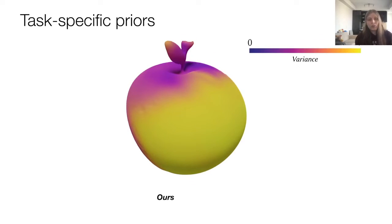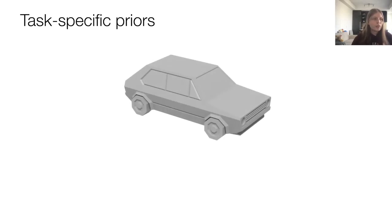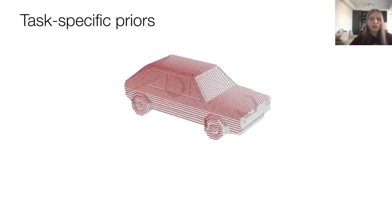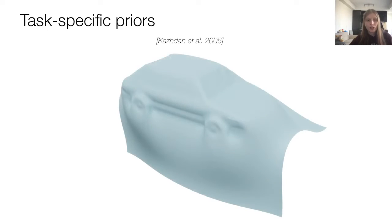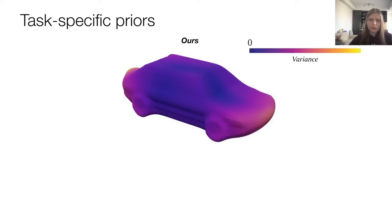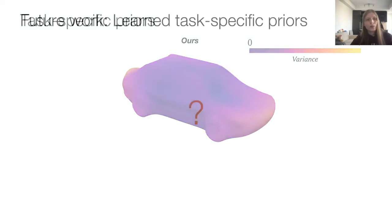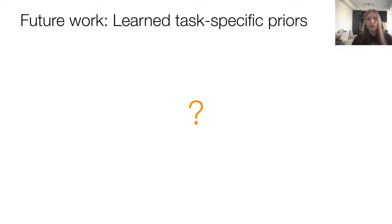Alright, an apple is still a pretty simple shape, even if a useful one in some agricultural robotics applications, but even marginally more complex priors can work for more complex examples. For example, by adding a prior to a car reconstruction, we get a much closer reconstruction to the ground truth. We are excited for future work that may use our new understanding to incorporate more complex, task-specific learned priors to Poisson surface reconstruction.